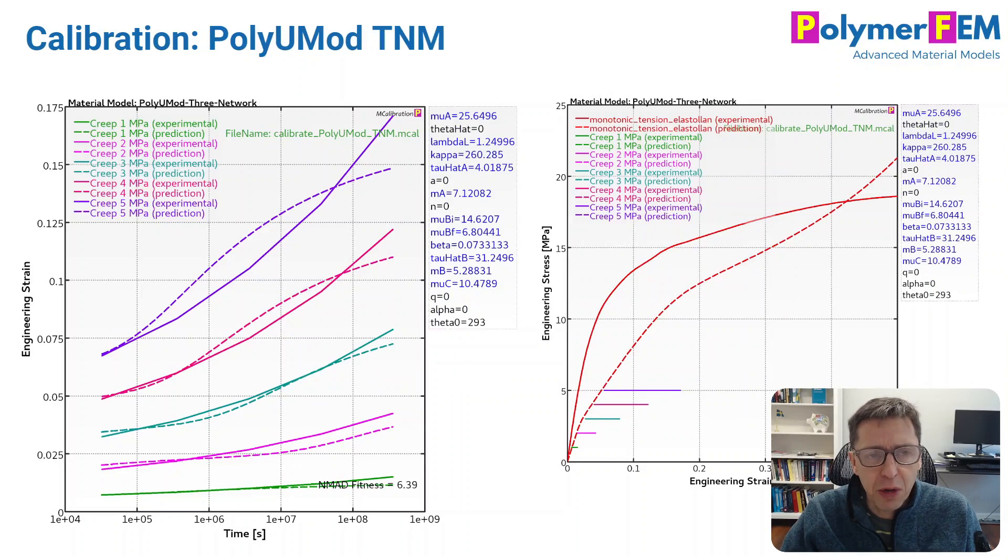Here's the three-network model from the PolyUMod library. ANSYS has a version of this called the three-network model 2, TNM model. And it's starting to look better now.